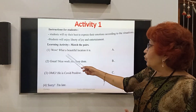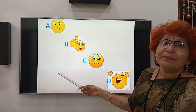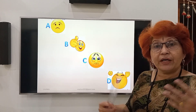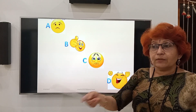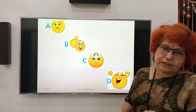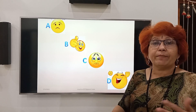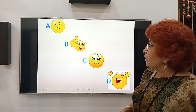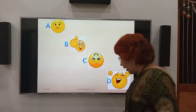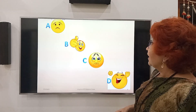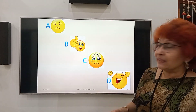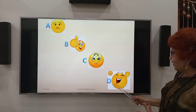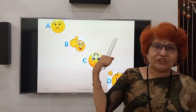All these are exclamatory sentences — they are exclaimed. Here's the first question: 'What a beautiful location it is.' This expresses joy. You might have recognized which emoji shows joy here — it is D. See the dancing face and dancing gestures on the face of the emoji.